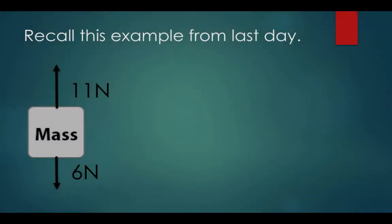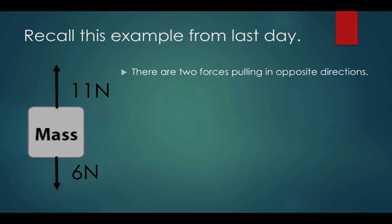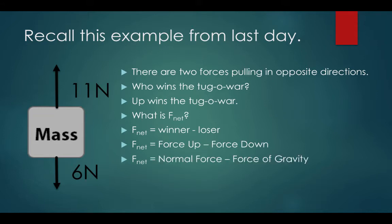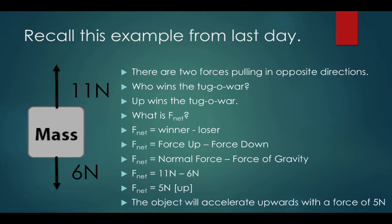Recall this example from last day. There are two forces pulling in opposite directions. Who wins the tug-of-war? Up wins the tug-of-war. Fnet is the winner minus the loser — in this case, force up minus force down. Fnet equals normal force minus force of gravity. Fnet is 11 newtons minus 6 newtons, which makes 5 newtons upwards. The object will accelerate upwards with a force of 5 newtons.